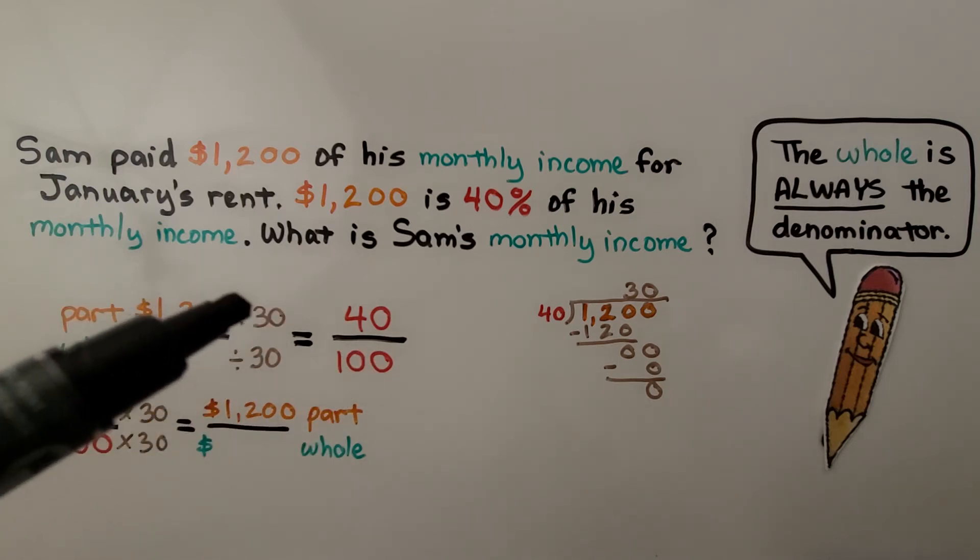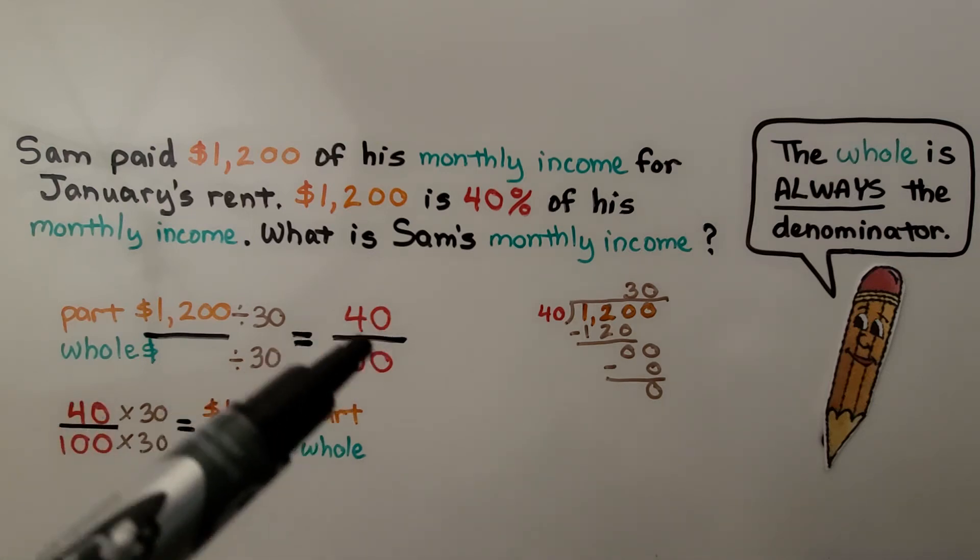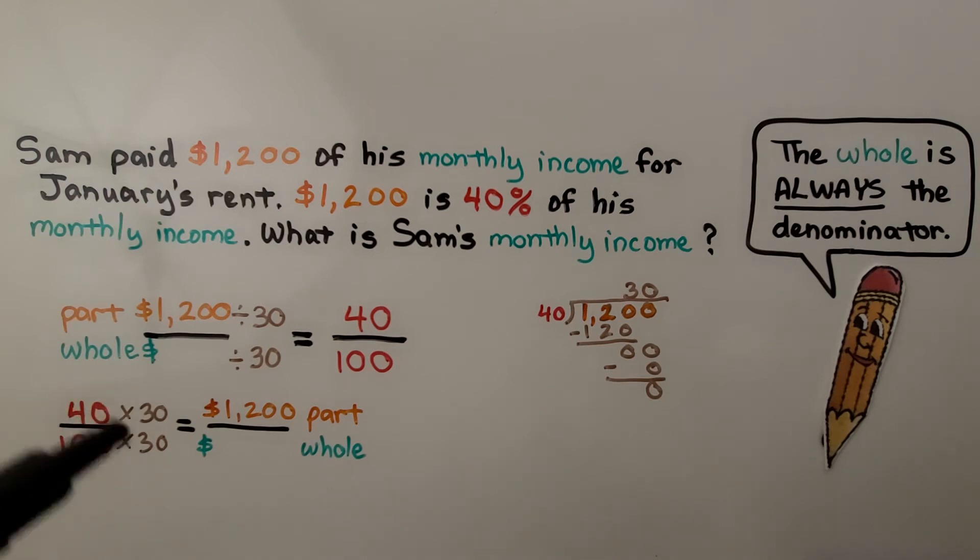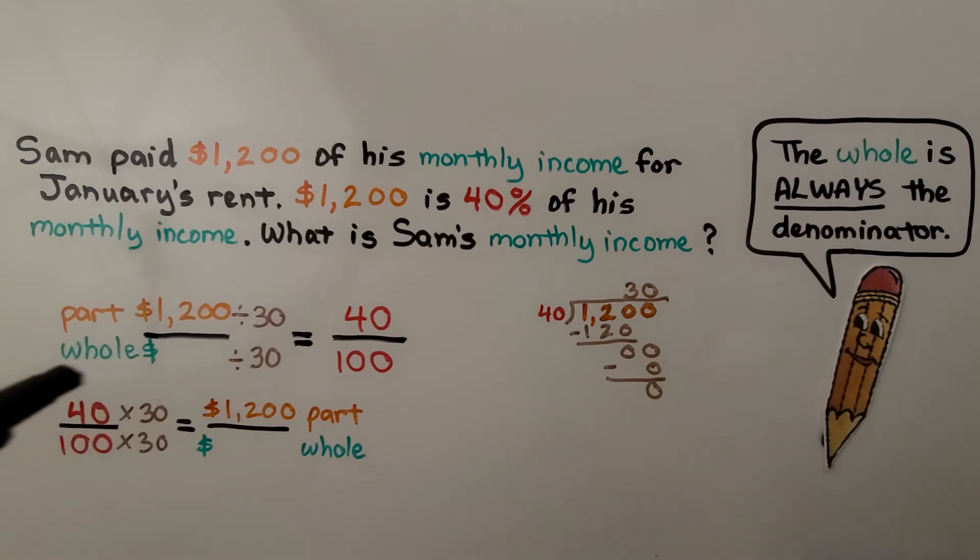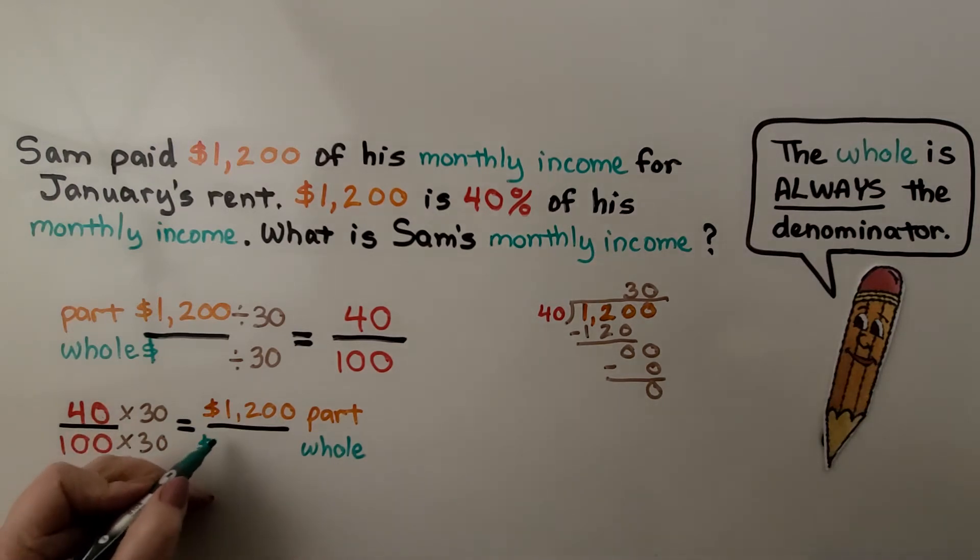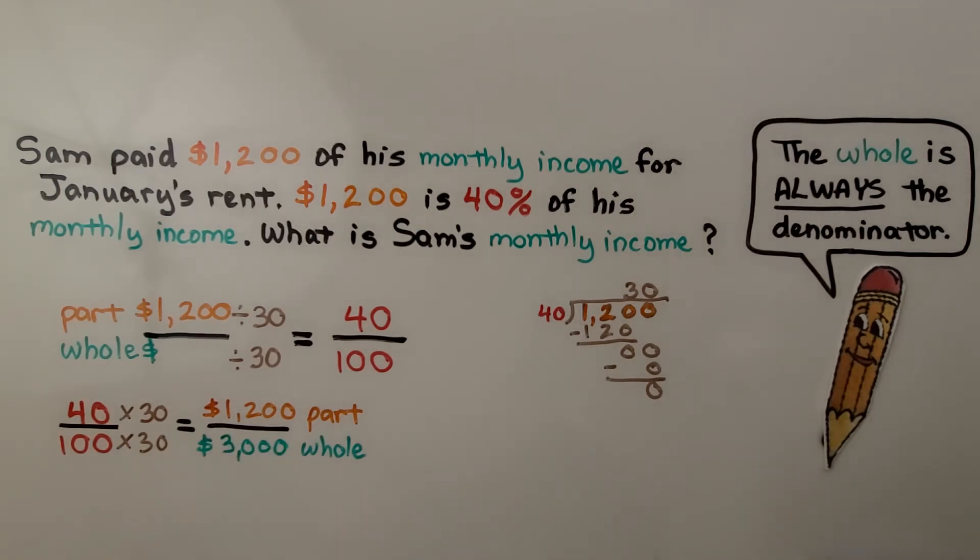Now, if we don't want to use division, we can use multiplication by writing the percentage on the left. Here we've got it on the right. We can write it on the left. And then we'll do 40 times some number is equal to 1,200. And that would be 40 times 30. That means we need to multiply this times 30.